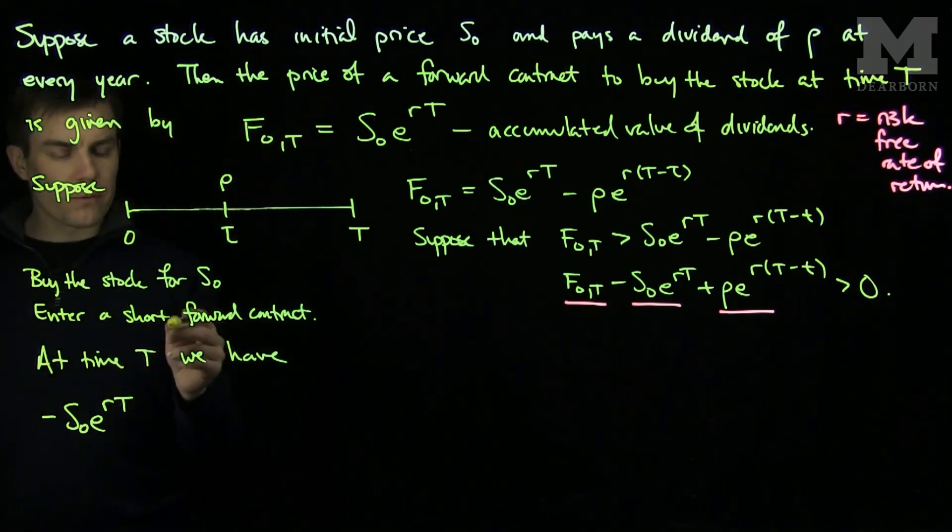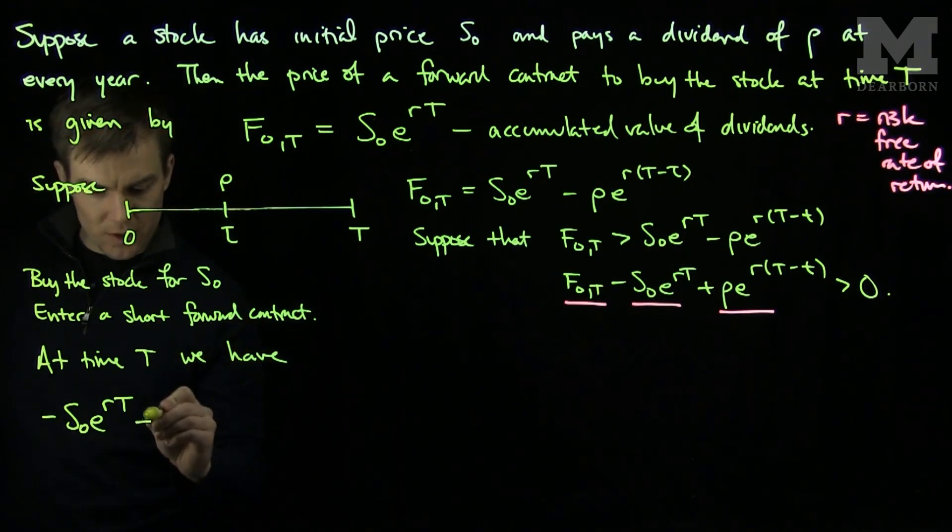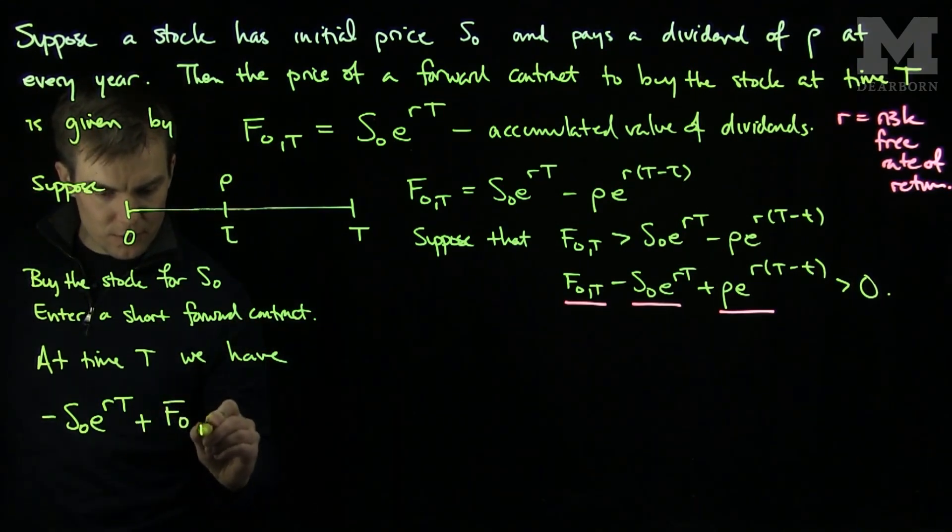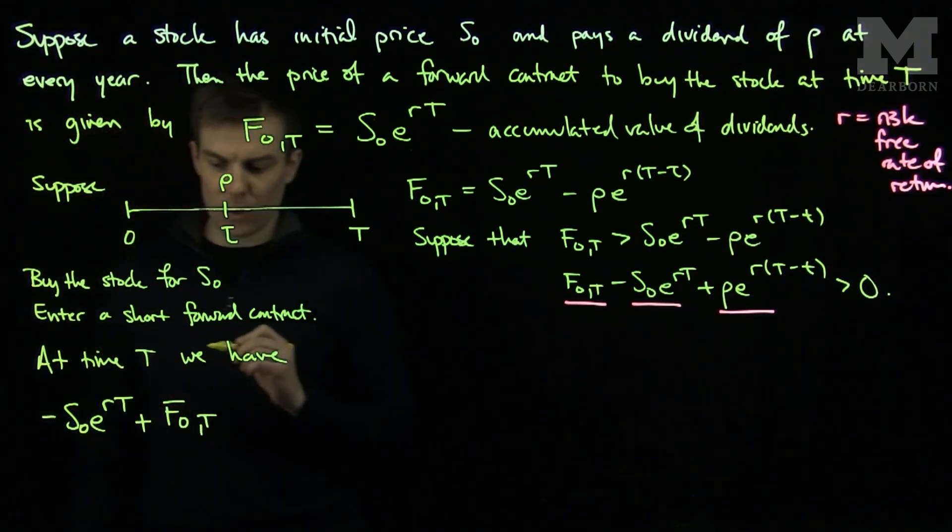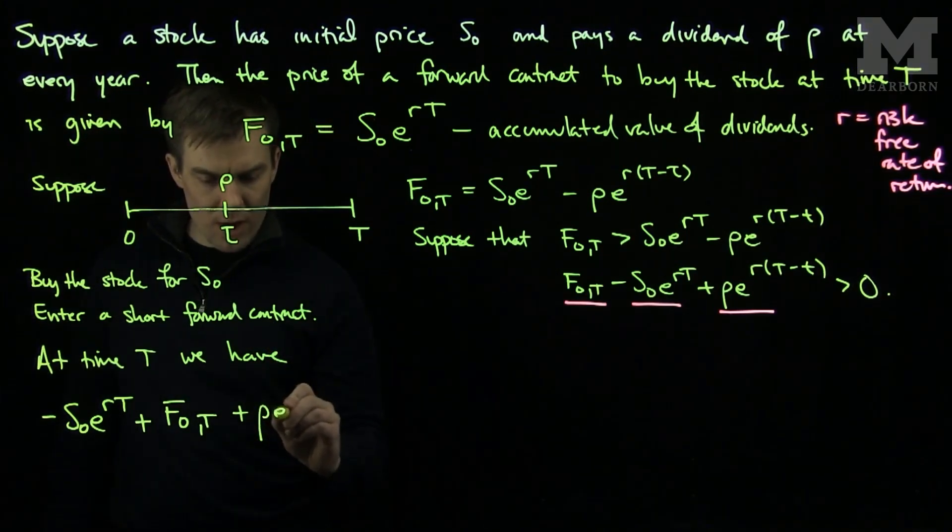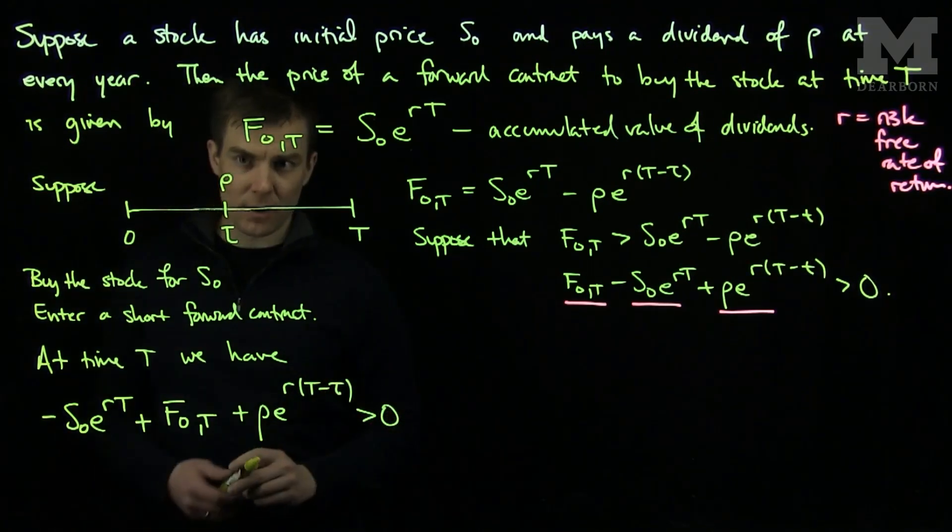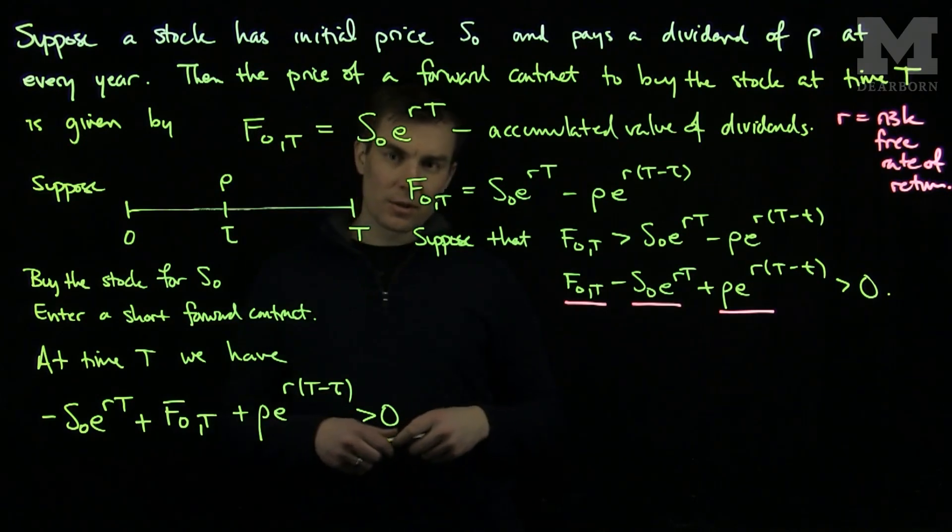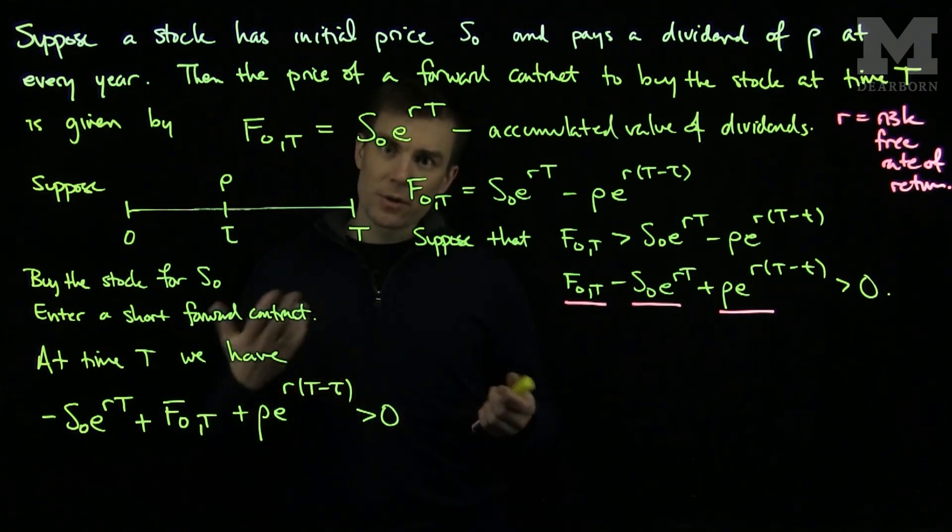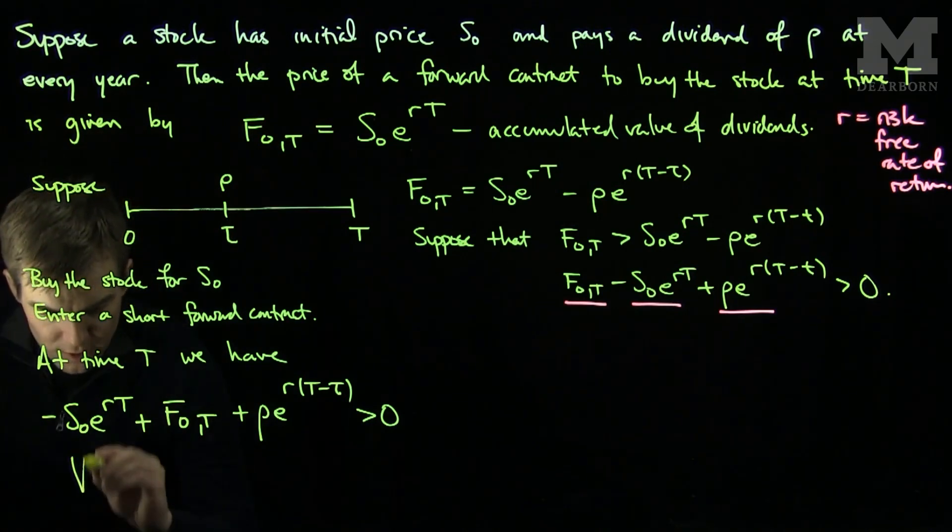We are in a short forward contract, so instead of buying the stock, we can sell the stock for F0T, so we get a profit of F0T from the execution of the short sale. And we will have the dividend that came from the stock rho e to the r(T-tau), which is strictly bigger than zero. So, by borrowing S0, buying the stock, and entering into a short forward contract, we have a violation of arbitrage. This violates arbitrage.